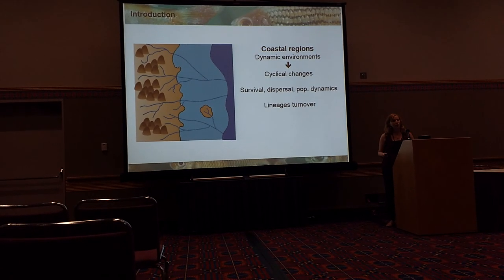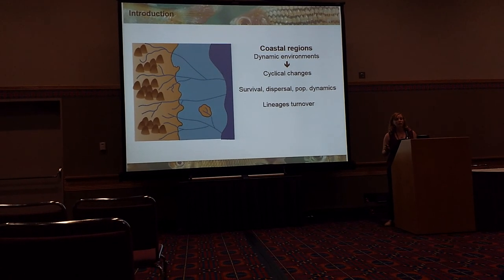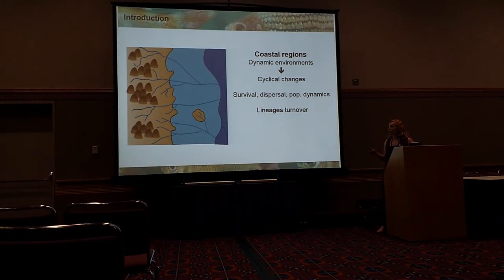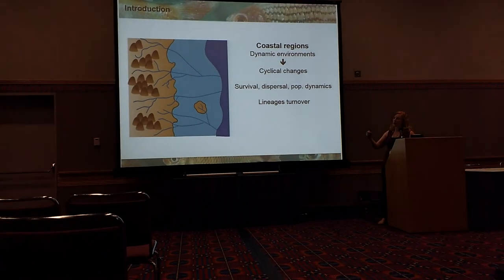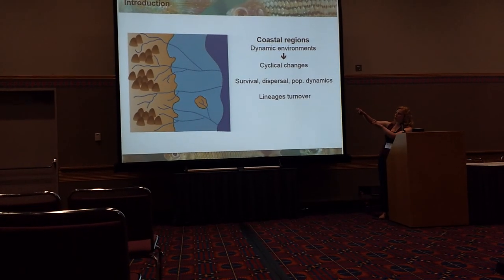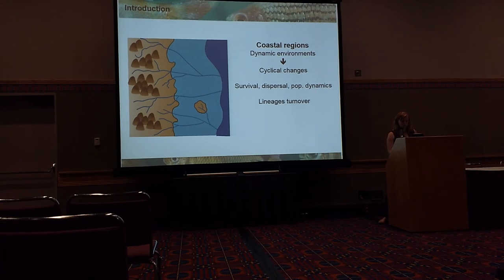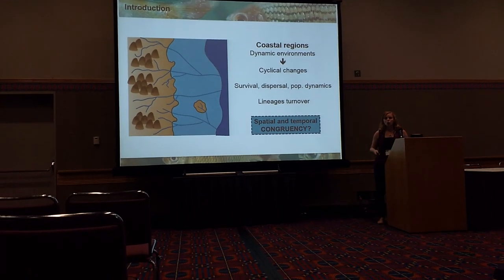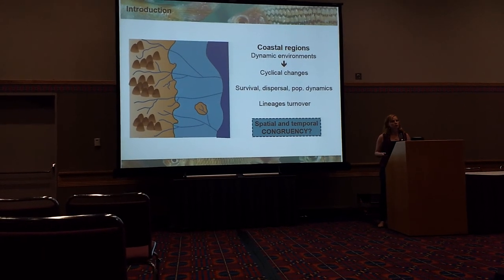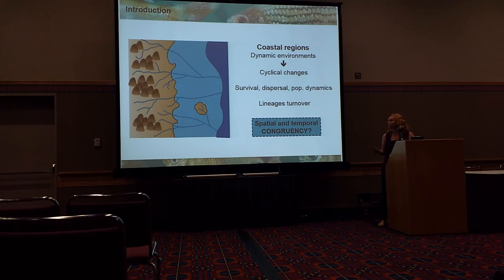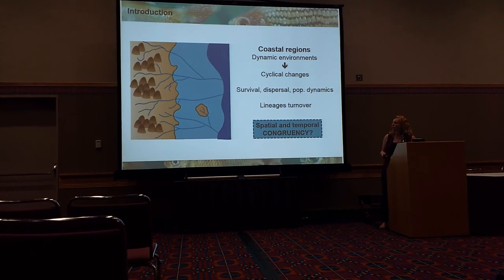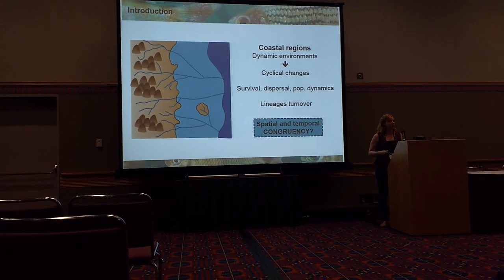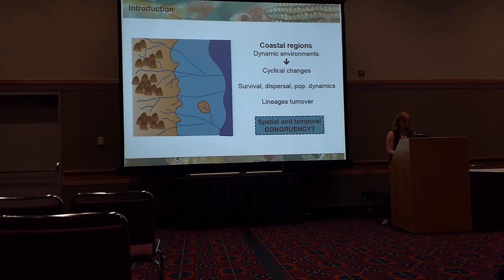Especially for freshwater fishes, given that they are going to be very constrained in these river environments. So this raises the question: should we really be seeing a congruent pattern between spatial and temporal divergence, given that we are in a very dynamic landscape such as coastal areas?